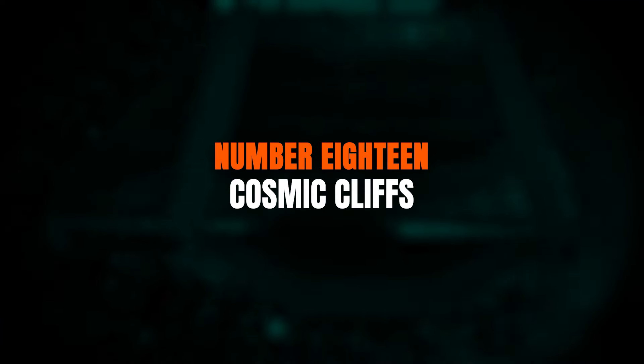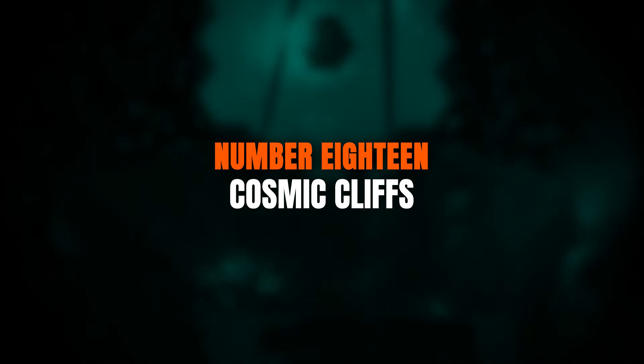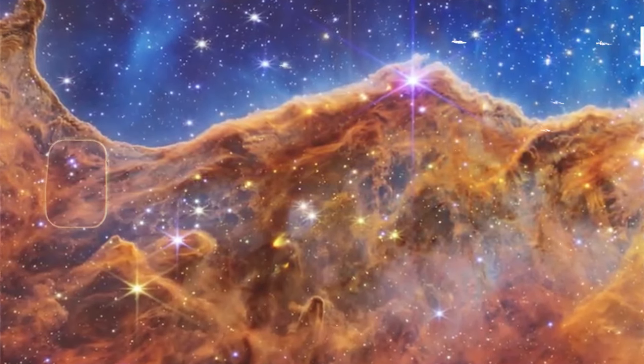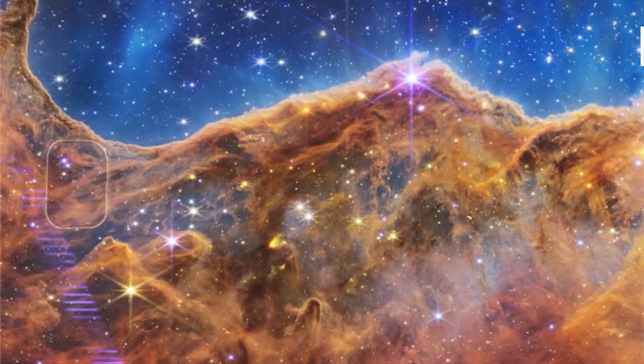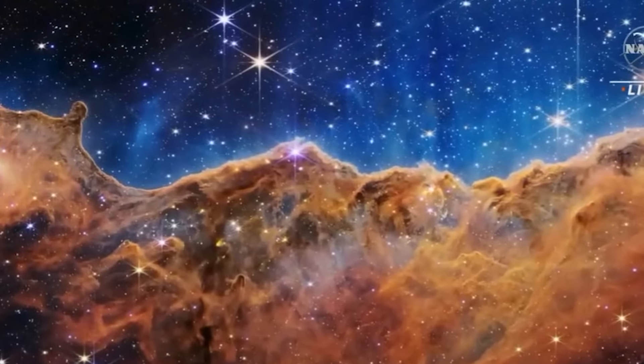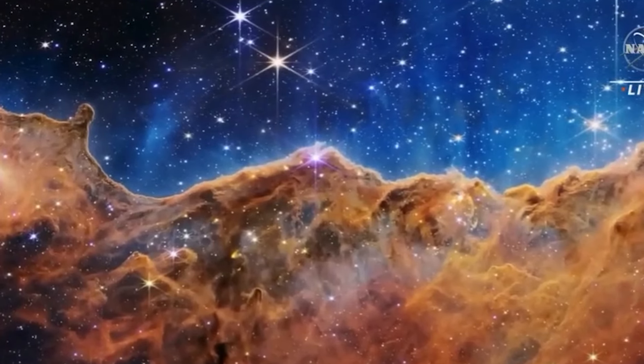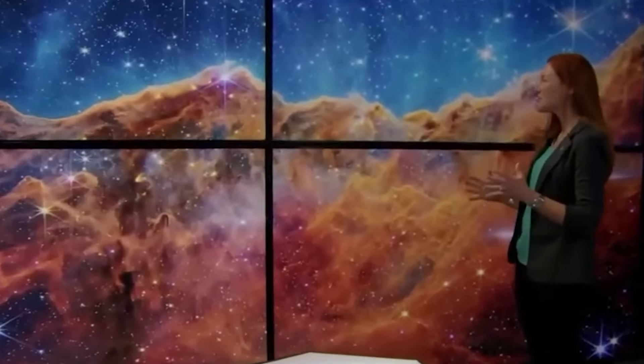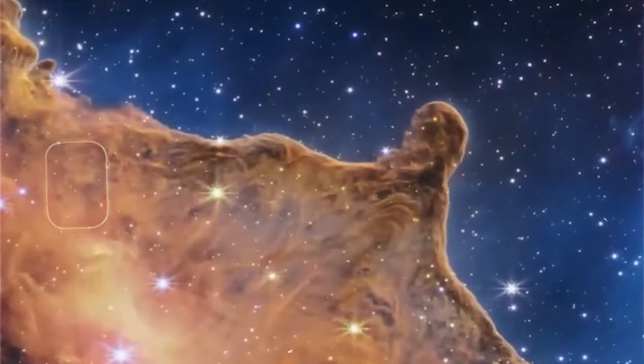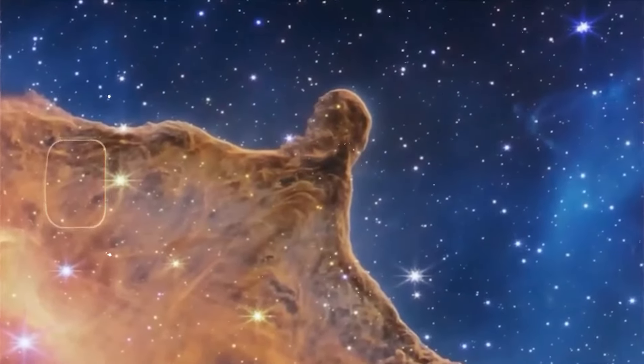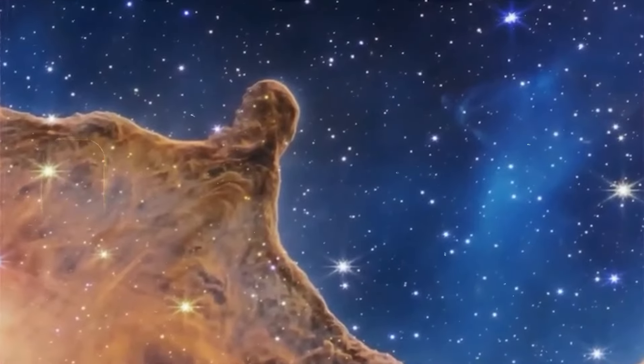Number 18. Cosmic Cliffs. The Cosmic Cliffs are located in the Carina Nebula, about 7,500 light-years from Earth. This stunning region of gas and dust earned its nickname, because the gaseous structures resemble a majestic mountain range. What gives these cliffs their striking appearance is the intense, ultraviolet light from newly formed stars. These powerful blasts of radiation erode the dust clouds, creating the dramatic mountain shapes we see in the image.